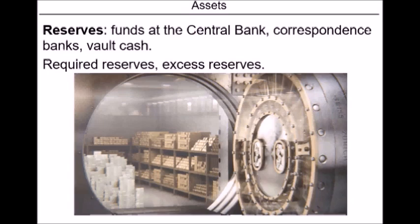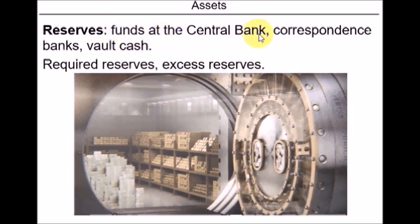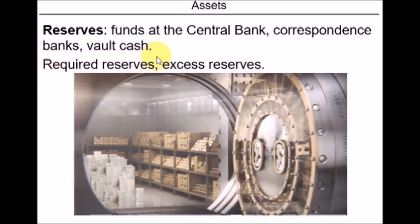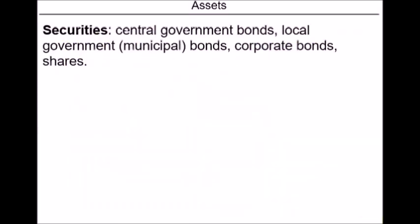Moving on to the left-hand side — the assets. First on the list and the most liquid type of assets are reserves. Reserves include all the cash a bank has in its vaults and ATMs, as well as deposits of the commercial bank held at the central bank, and deposits of small commercial banks at larger correspondent banks. There are two types of reserves: required reserves, which is the minimum amount a bank must hold according to government regulation — a percentage of deposits — and excess reserves, which is anything above the required amount.